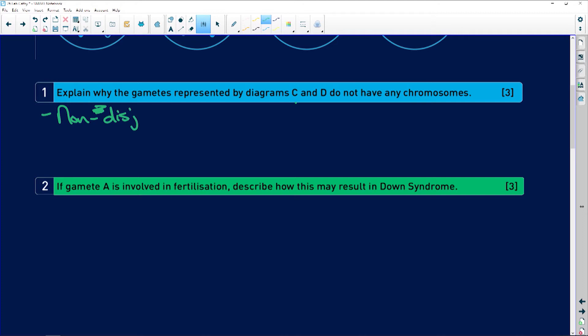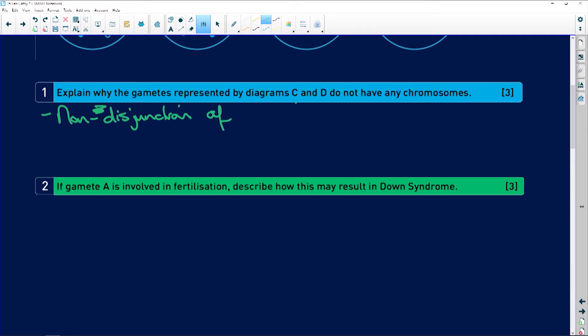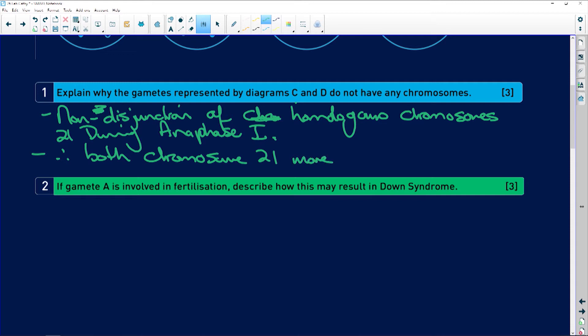They say, explain why the gametes represented in C and D do not have any chromosomes. Easy. It's non-disjunction. It didn't join. Remember, the word junction comes from join. So if there's a junction, it's where there's a join. So disjunction means to separate. And non-disjunction means they did not separate. They stayed together.